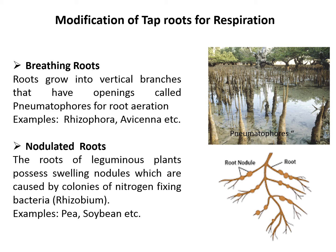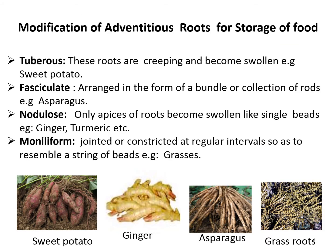Modification of adventitious roots for storage of food: the first is tuberous roots. These roots are creeping and become swollen, and they always occur singly. The roots arise from the nodes. An example is sweet potato.